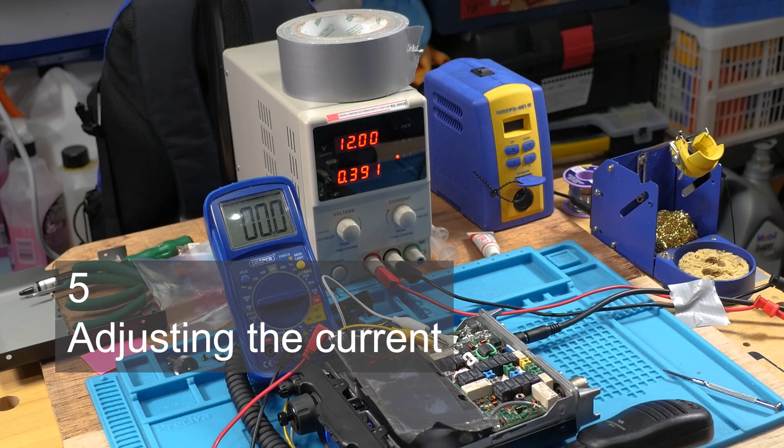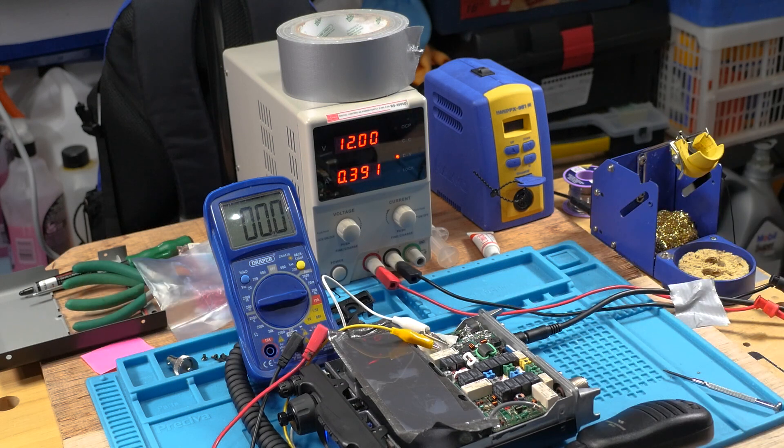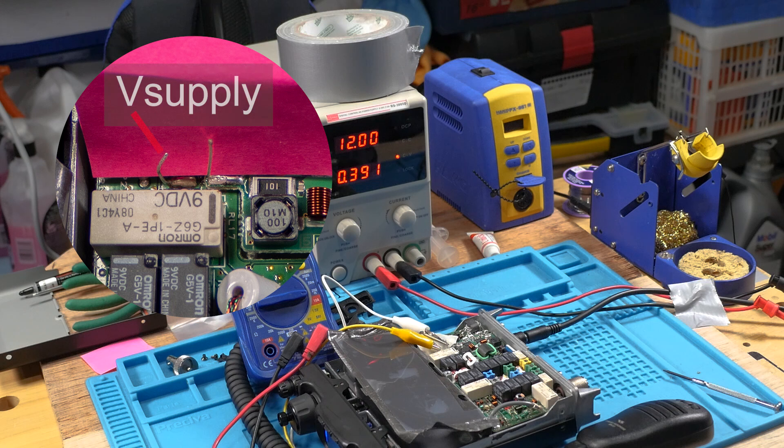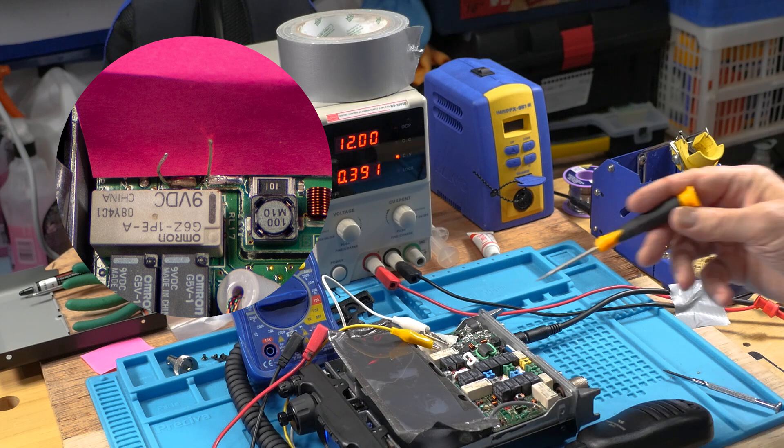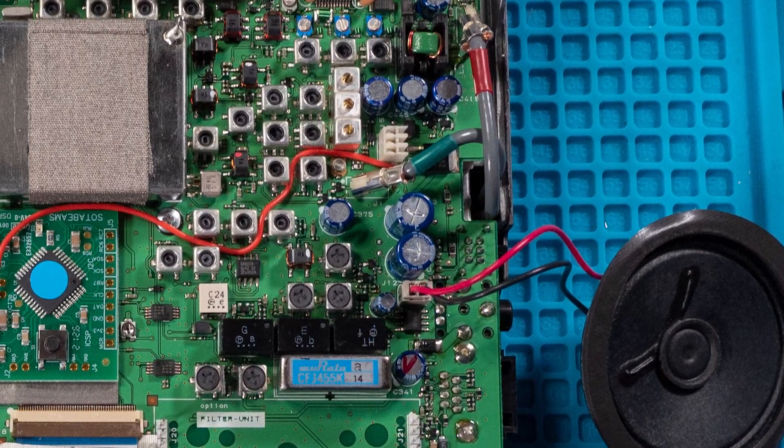I finished all the soldering and the last thing I did was to put an extra jumper onto the power input tag of the finals board. On the other jumper, there should always be the supply voltage. I've got my power supply set to 12 volts and that is just under 12 volts.